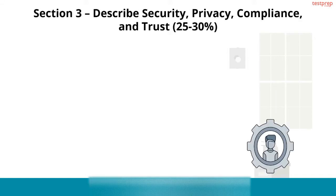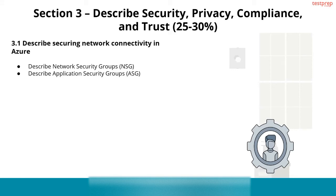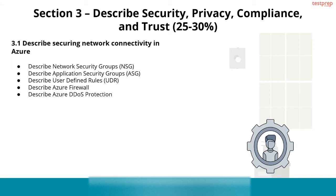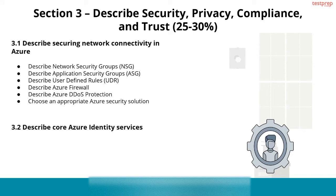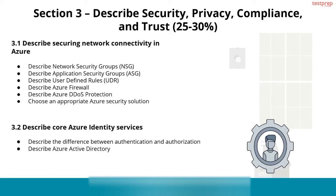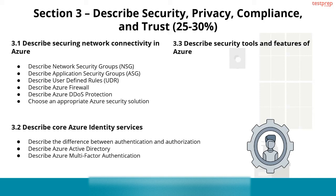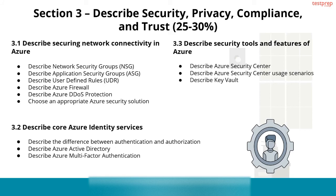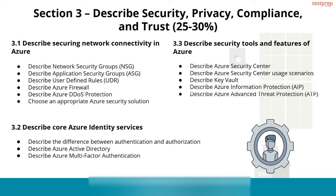Section 3 — Describe Security, Privacy, Compliance, and Trust, comprising 25 to 30%. Number 1: describe securing network connectivity in Azure, including network security groups, application security groups, user-defined rules, Azure Firewall, Azure DDoS protection, and choosing an appropriate Azure security solution. Number 2: describe core Azure identity services, including the difference between authentication and authorization, Azure Active Directory, and Azure multi-factor authentication. Number 3: describe security tools and features of Azure, including Azure Security Center and its usage scenarios, Key Vault, Azure Information Protection, and Azure Advanced Threat Protection.